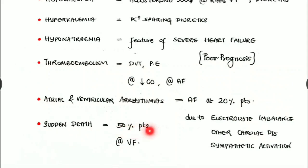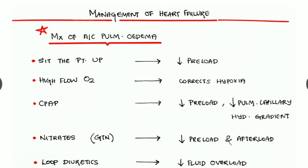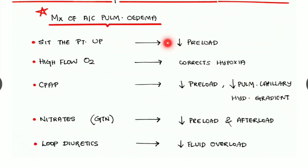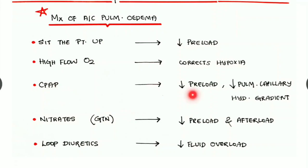In 50% of patients who are not properly treated, death may occur due to ventricular fibrillation. In the management of heart failure, the most important priority is management of acute pulmonary edema, commonly seen in acute left ventricular failure. First, sit the patient up to reduce preload. Give high-flow oxygen to correct hypoxia.